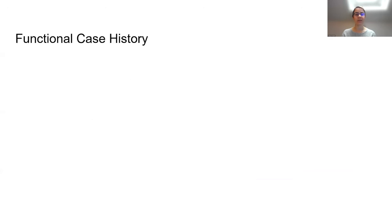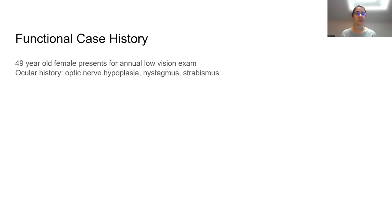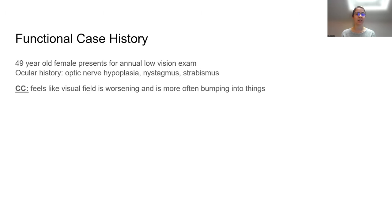For our first case, we have a 49-year-old female coming in for her annual low vision exam. She has a history of optic nerve hypoplasia with nystagmus and strabismus. At this visit, she reports that her vision has worsened and she's more often bumping into things. This is surprising because optic nerve hypoplasia is a congenital condition that we expect to remain roughly stable throughout life, so these are not new findings and the optic nerve hypoplasia should be stable in terms of level of vision.